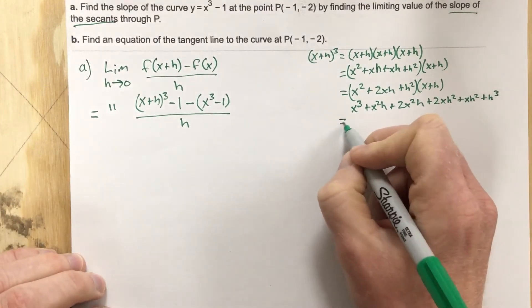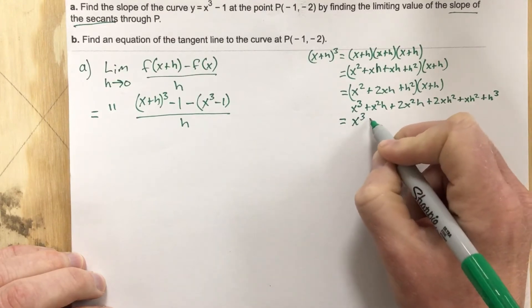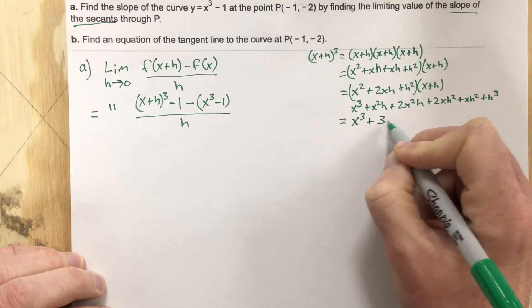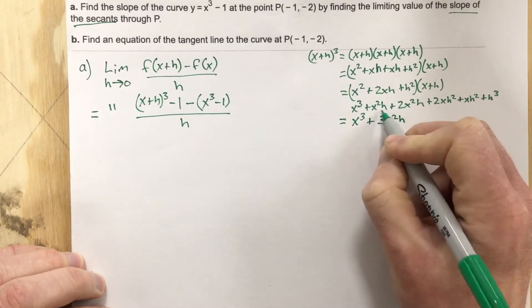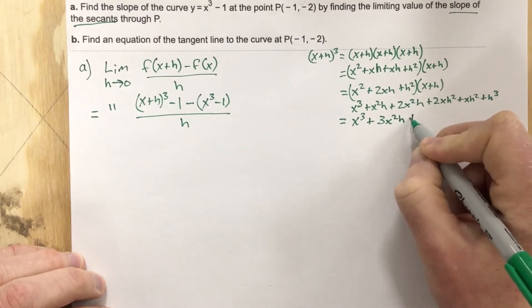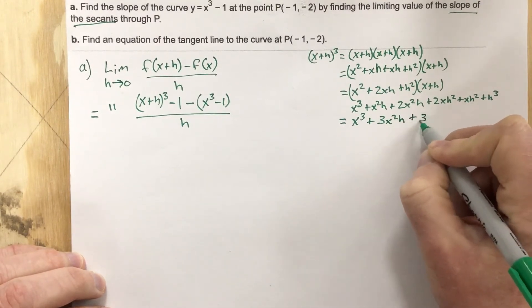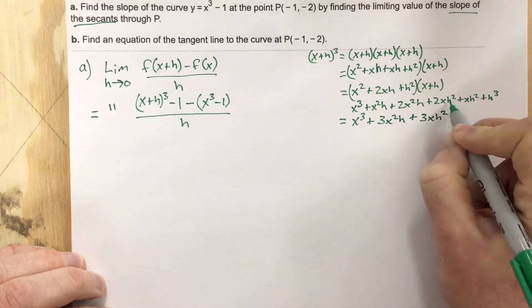Let's combine some like terms there. We get x cubed plus this will be 3x squared h. I'm going to combine this with this. Plus 3xh squared, combine these two together, plus h cubed.